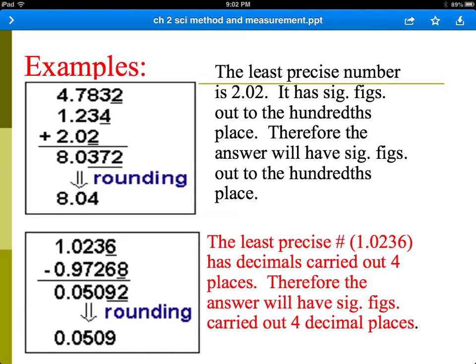In this second example, same process. This is a subtraction. This first number has four decimal places. The second number has five decimal places. So we have to round to the number that contains the least number of decimal places. So we'll go out four decimal places and round, and therefore our answer is 0.0509.